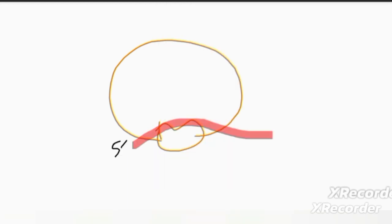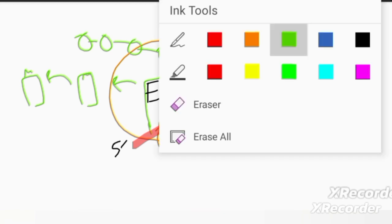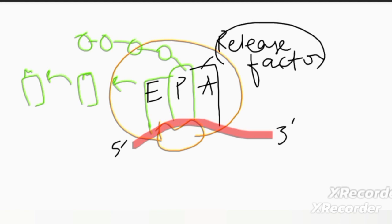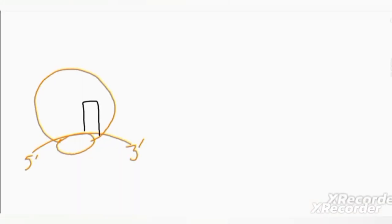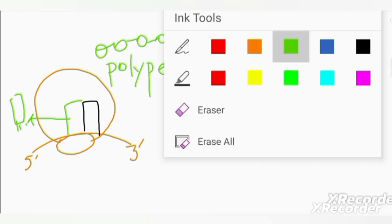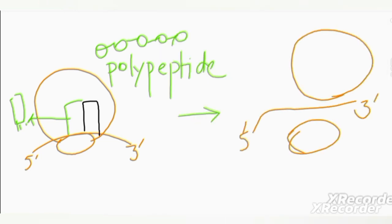The last step is termination. The ribosomal subunits move along the messenger RNA until a stop codon is exposed at the A site. The stop codon does not code for any amino acid, so no transfer RNA carrying an amino acid binds there. Instead, a release factor binds, which releases the ribosome and the polypeptide chain. The polypeptide chain is separated from the transfer RNA, and the ribosomal subunits, messenger RNA, and transfer RNA all dissociate. This is known as termination.